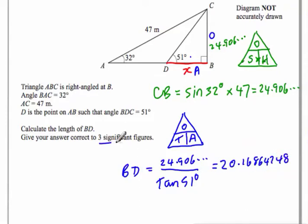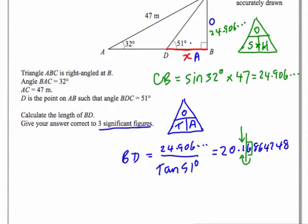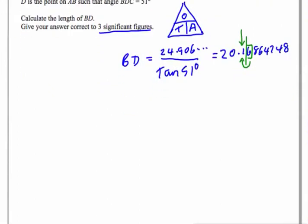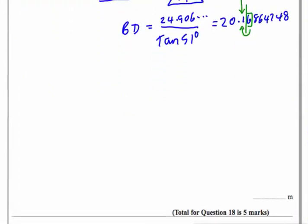They want the answer to three significant figures. So I look at the third significant figure, which is the one. Do I need to round? Yes, because the next digit is a six, so it goes up. My answer is 20.2.